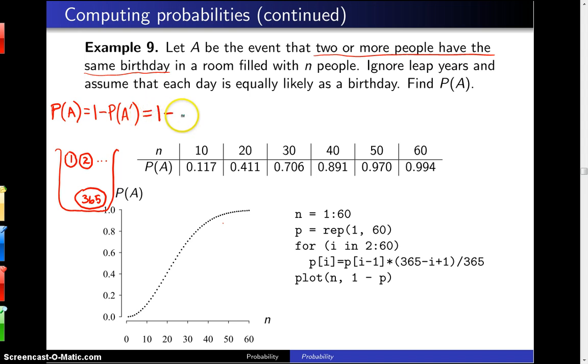So that is 1 minus a ratio. In the denominator, we want all the ways of pulling N balls out of the urn. That is going to be 365 ways for the first draw by the multiplication rule, 365 ways for the second draw, all the way down to 365 ways for the nth draw. So we have 365 to the nth power in the denominator.